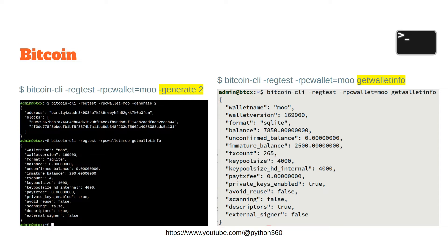You can see the error message if you don't specify the correct wallet. Here I generated two blocks, and you can see it created two blocks. If you do GetWalletInfo, you can see the wallet name, the wallet version, the format — SQLite — and the balance. I've created some balance there: 7850.